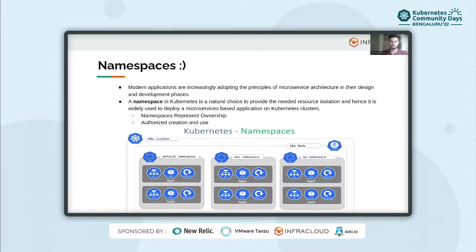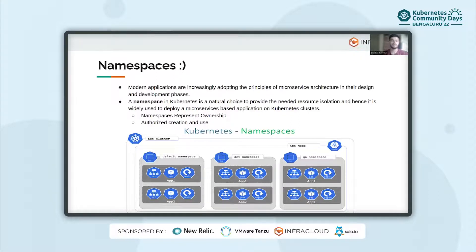Modern applications are increasingly adopting the principle of microservice-based architecture. An application is broken down into a number of smaller modules or services, often developed and owned by different teams. This approach introduces the need for micro-modularity, wherein logical and isolated units of resources are created for microservices to be deployed in. A namespace in Kubernetes is a natural choice to provide the needed resource isolation and hence is widely used to deploy microservice-based architectures on Kubernetes clusters.